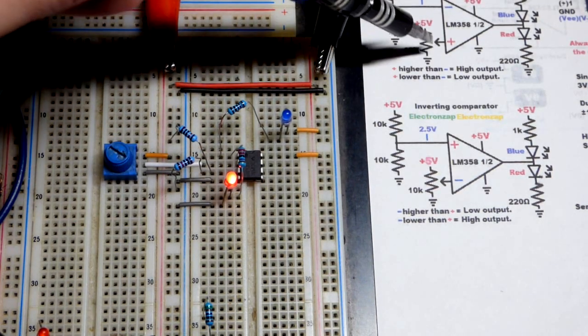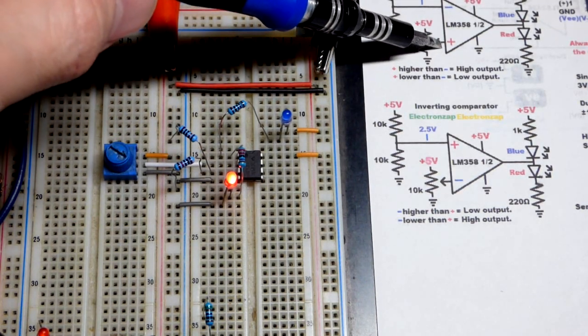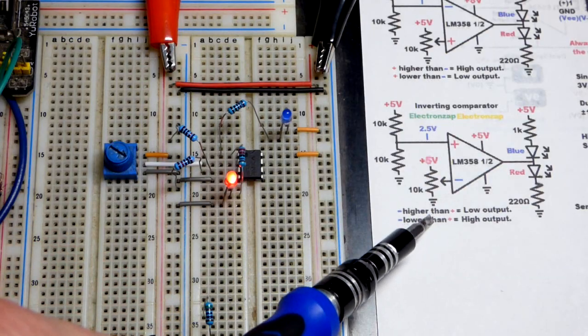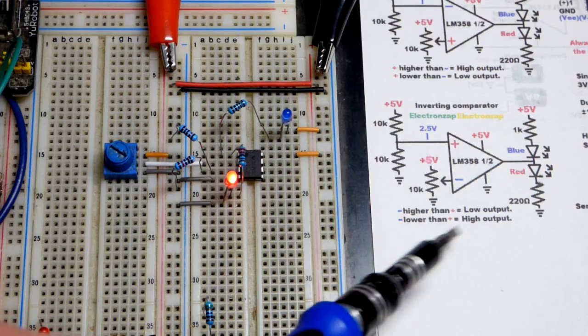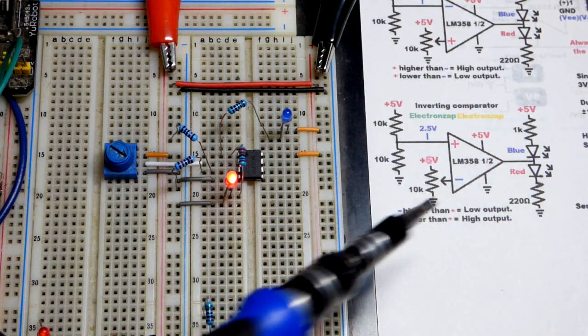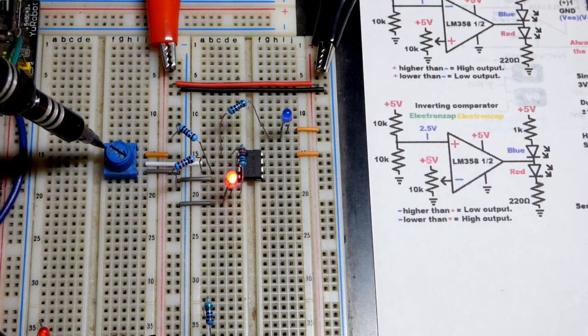So now in the last video we looked at the non-inverting comparator. The diagram below it is the inverting comparator. That's one reason why we're doing this video. Plus it's the opposite circuit, so it's a good time to do so.